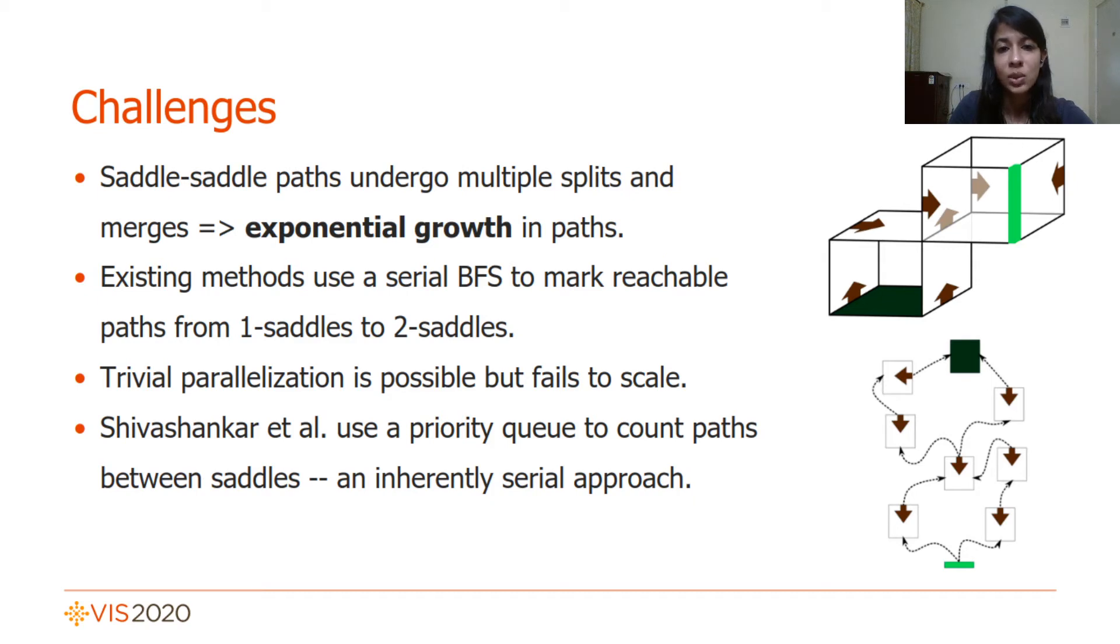The best-known algorithms use serial variants of a breadth-first search with the fastest method making use of a priority queue. A trivial parallelization is possible, but this fails to scale well. Our work aims to improve upon these methods by introducing a parallel algorithm which reduces step 3 to an embarrassingly parallel task.